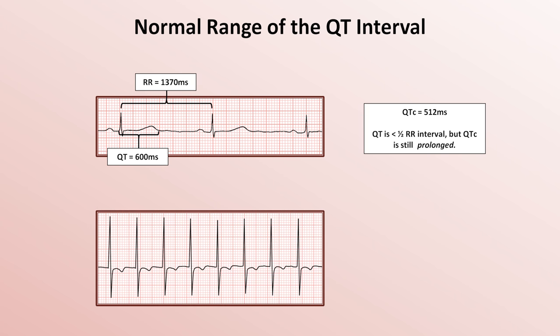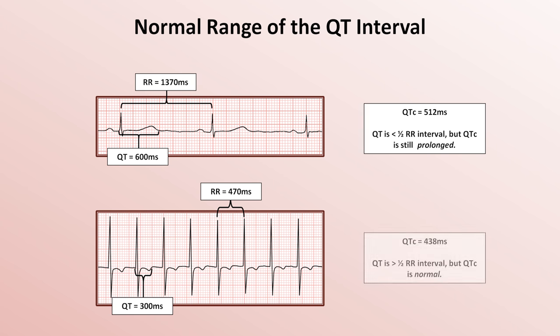On the other hand, in this tachycardic patient with a heart rate of 128 and an RR interval of 470 milliseconds, the QT interval of 300 initially looks too long. But plugging the numbers into Bazett's results in a QTc of 438, which is normal. There are several other equations used to correct the QT interval for heart rate, all thought to be modestly more accurate than Bazett's formula. However, Bazett's is far and away the most commonly used, and unless you intend to become an electrophysiologist, you will not need to know about these alternative approaches.